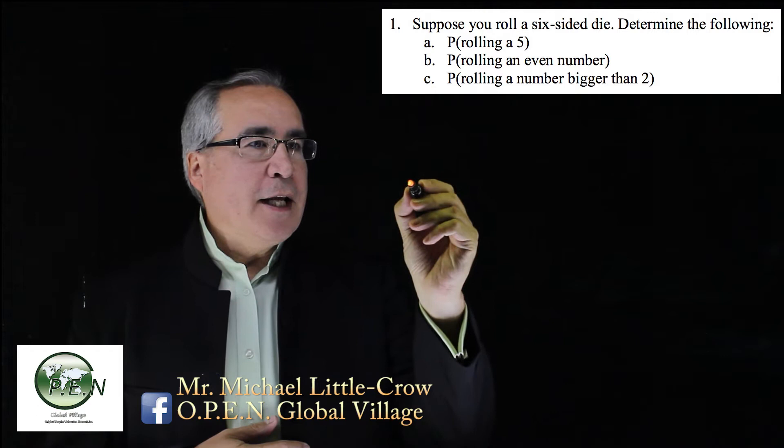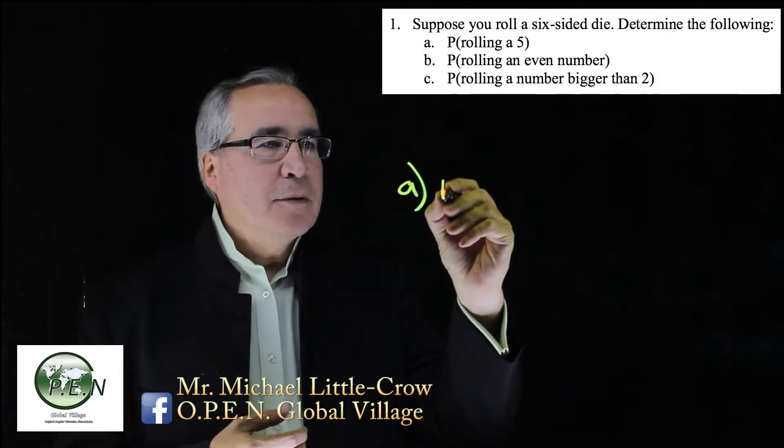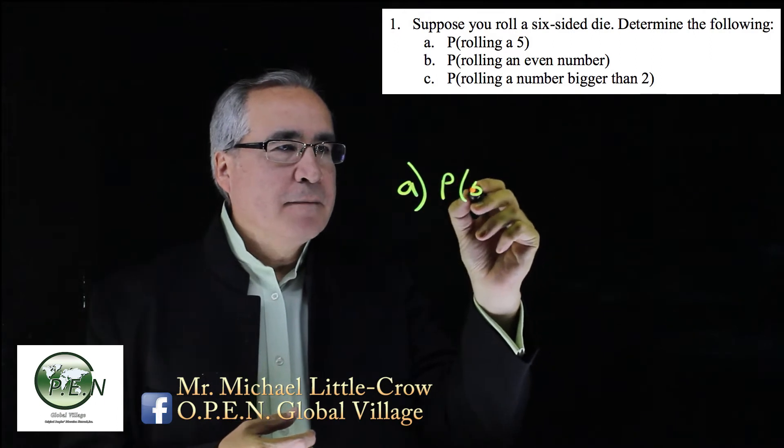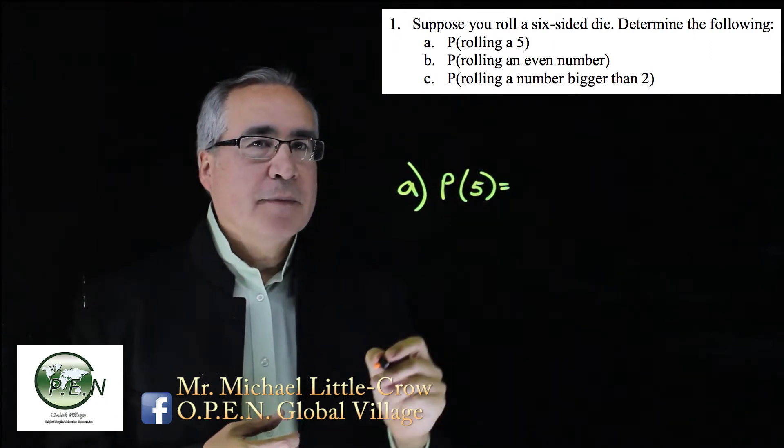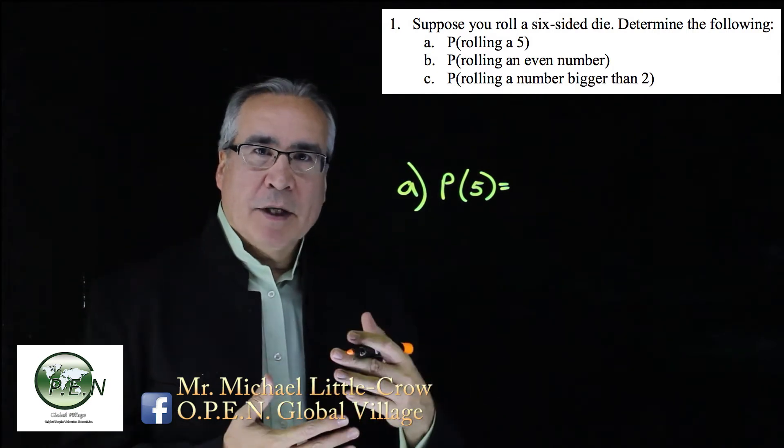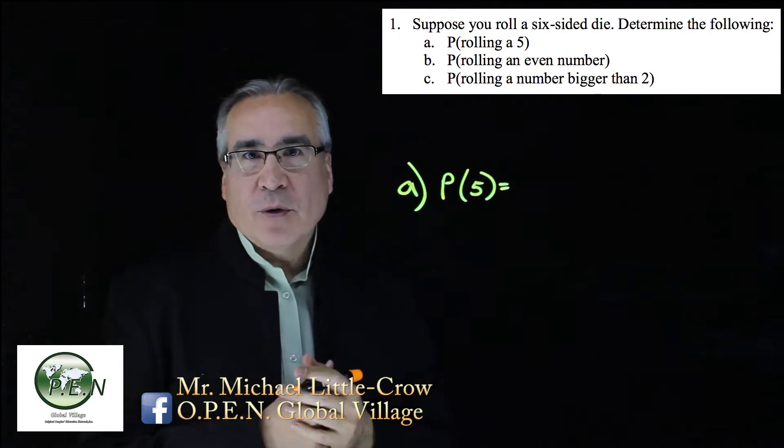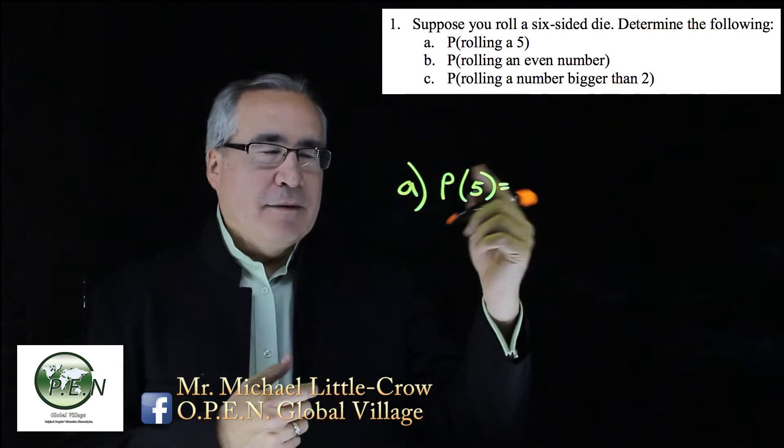The first question, the A part, is what is the probability that we roll a five? So we'll just write that as probability that we roll a five. With probability, it's all about counting and then coming up with a ratio of looked-for events divided by total events, total outcomes.